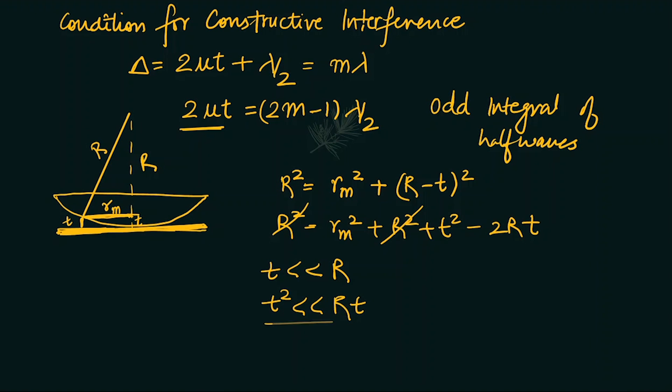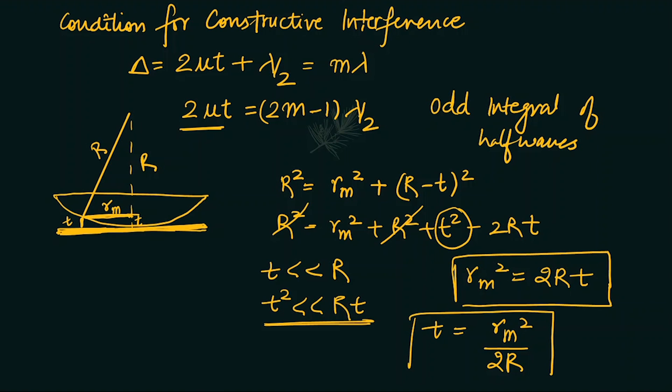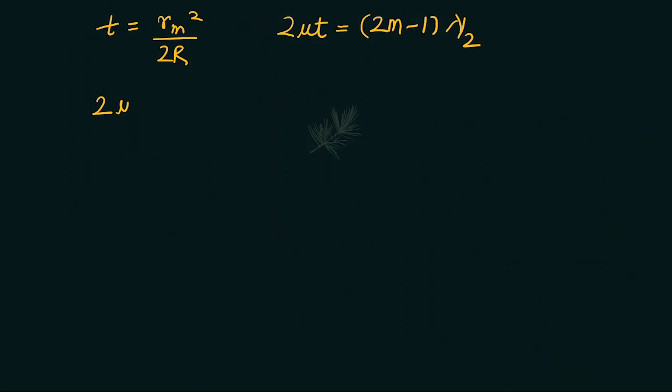That means our r_m² is equal to 2Rt. Thickness can be written as r_m² over 2R. So let's use this expression into this condition, let's put this t expression.